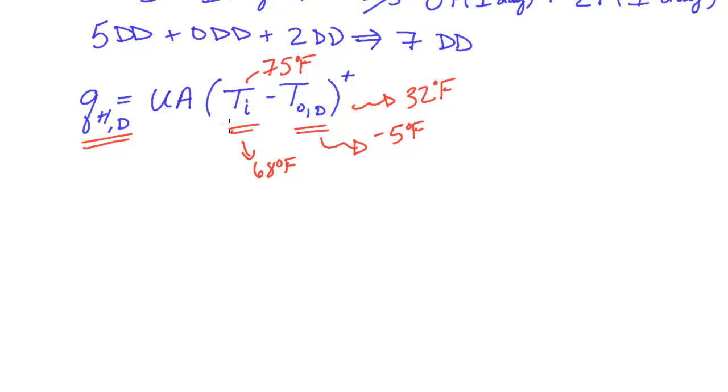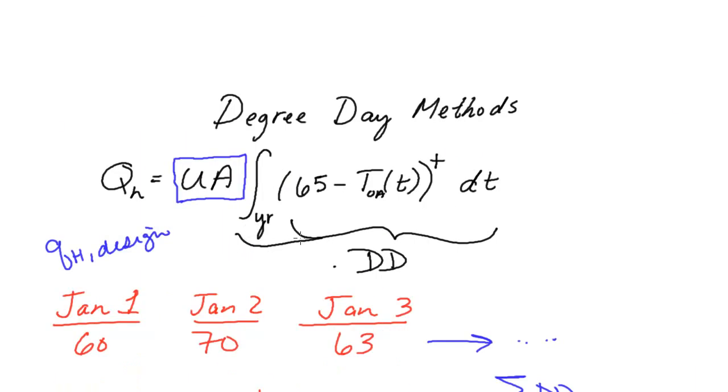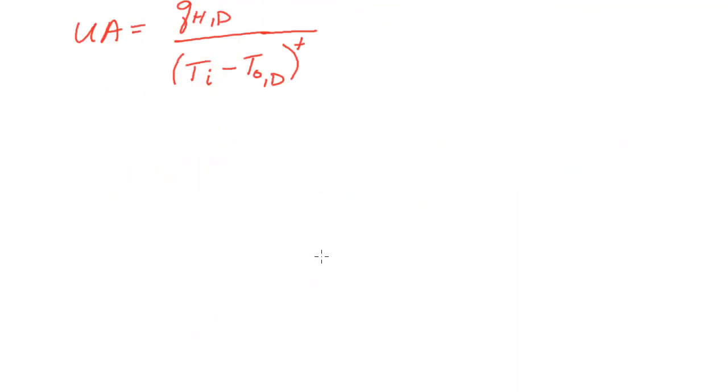But now, with all this information, we could just solve for UA. So what is UA equal to? UA is that design heat flow divided by that temperature difference. So let's use this information for UA and let's plug it back into what we had up here. So instead of UA, we're going to have design heat flow over that temperature difference.